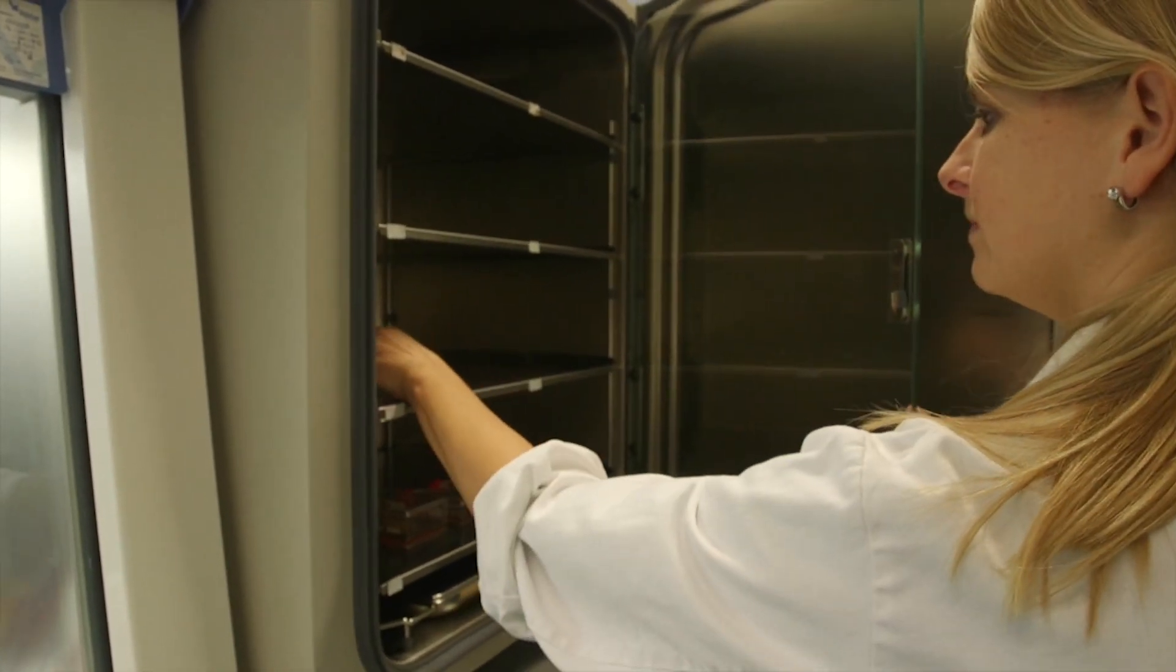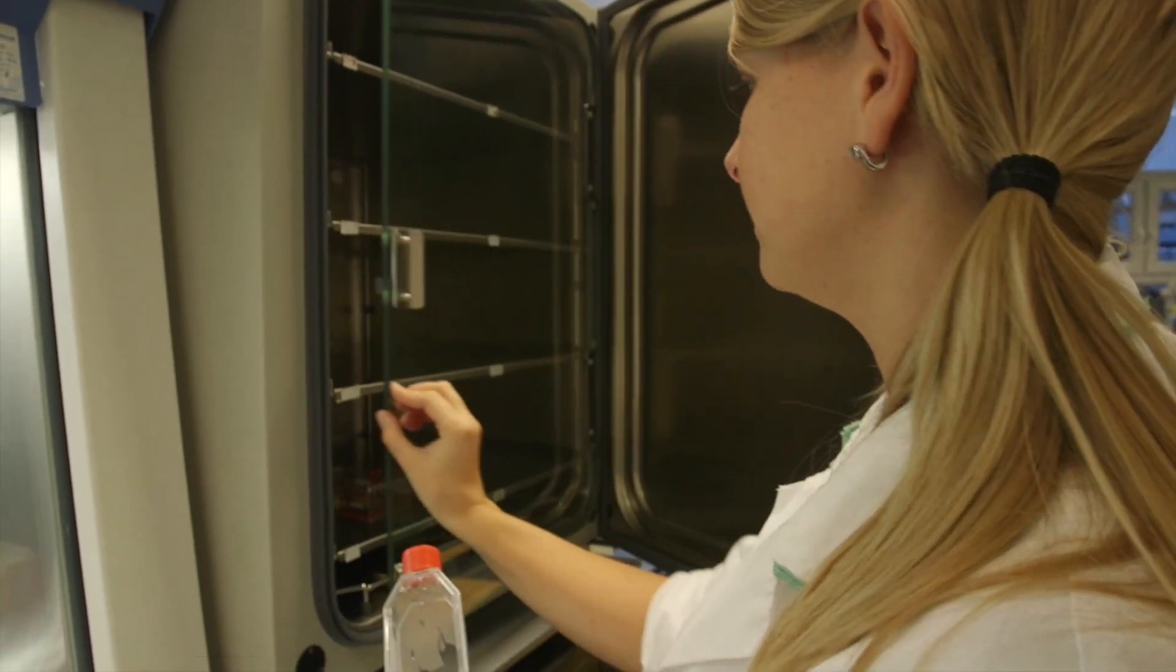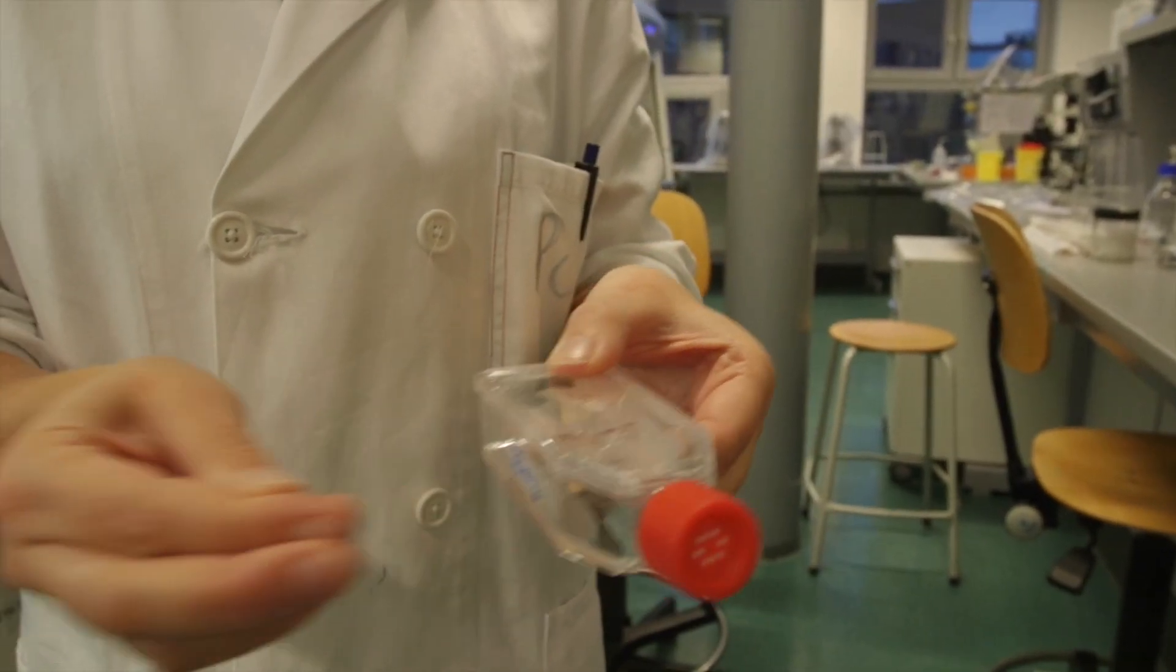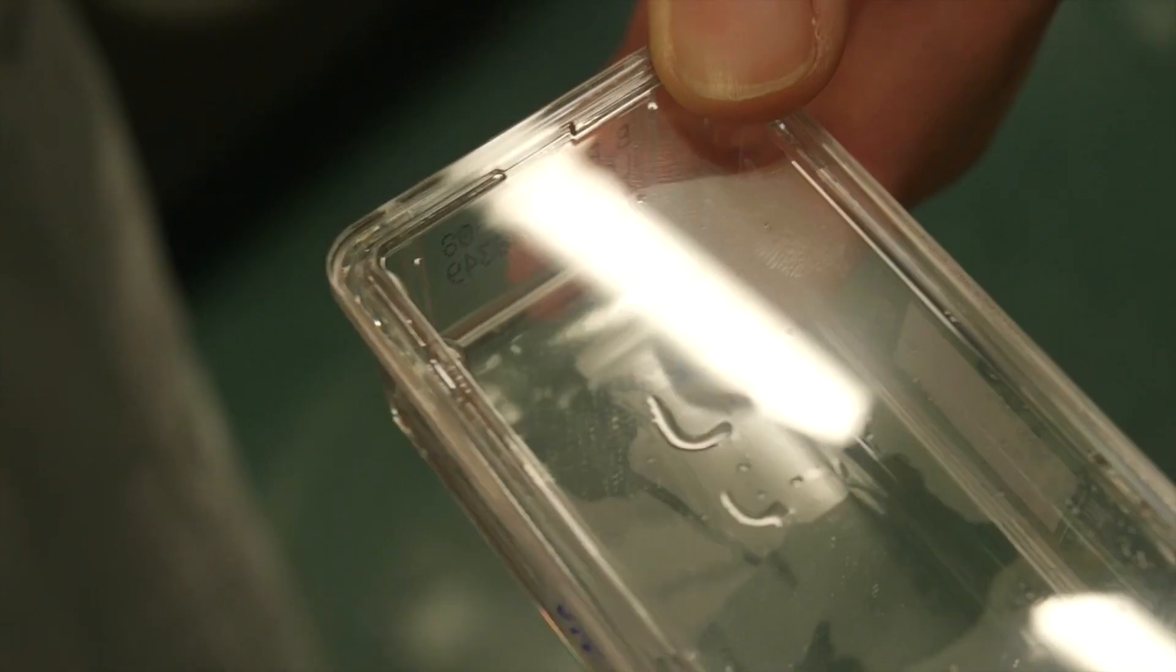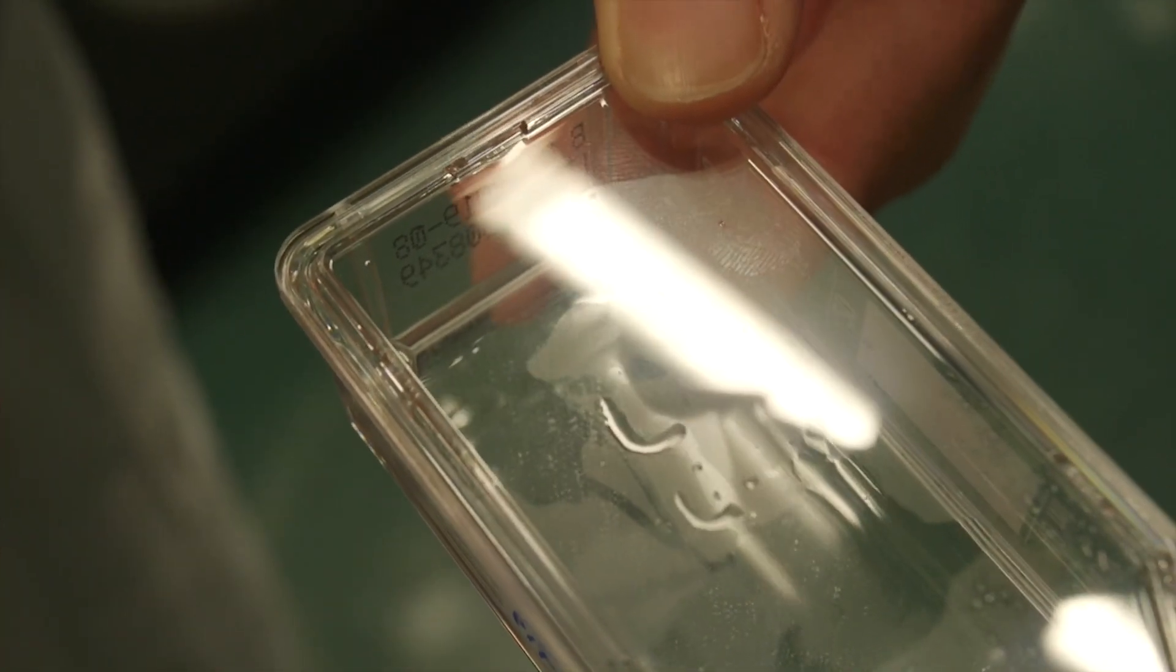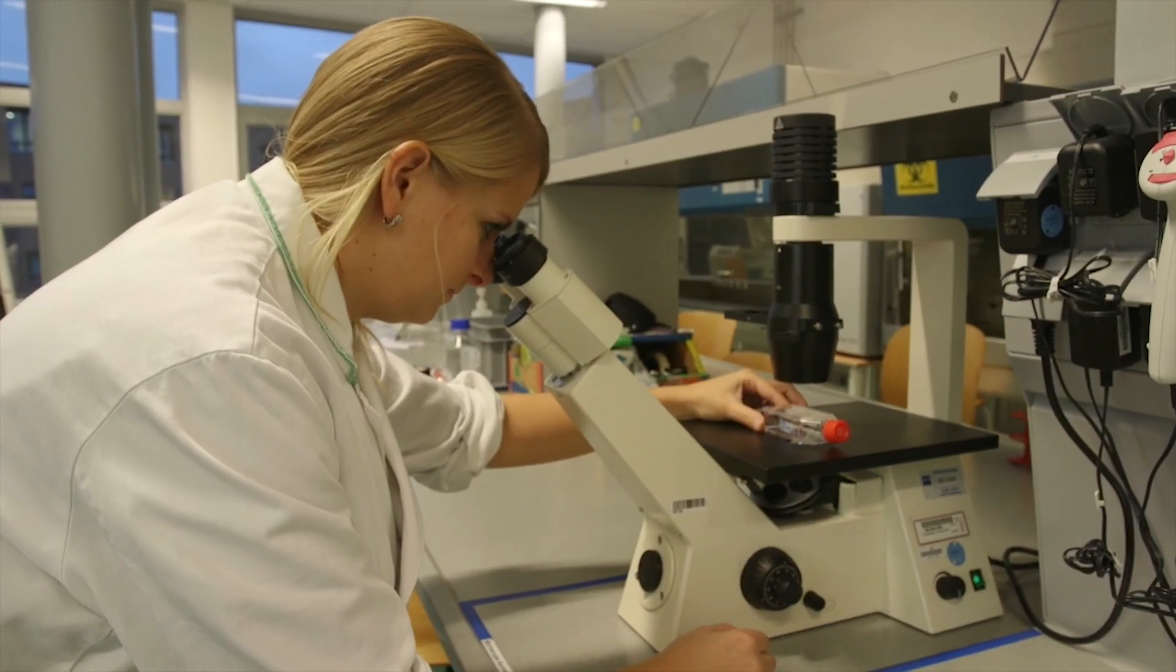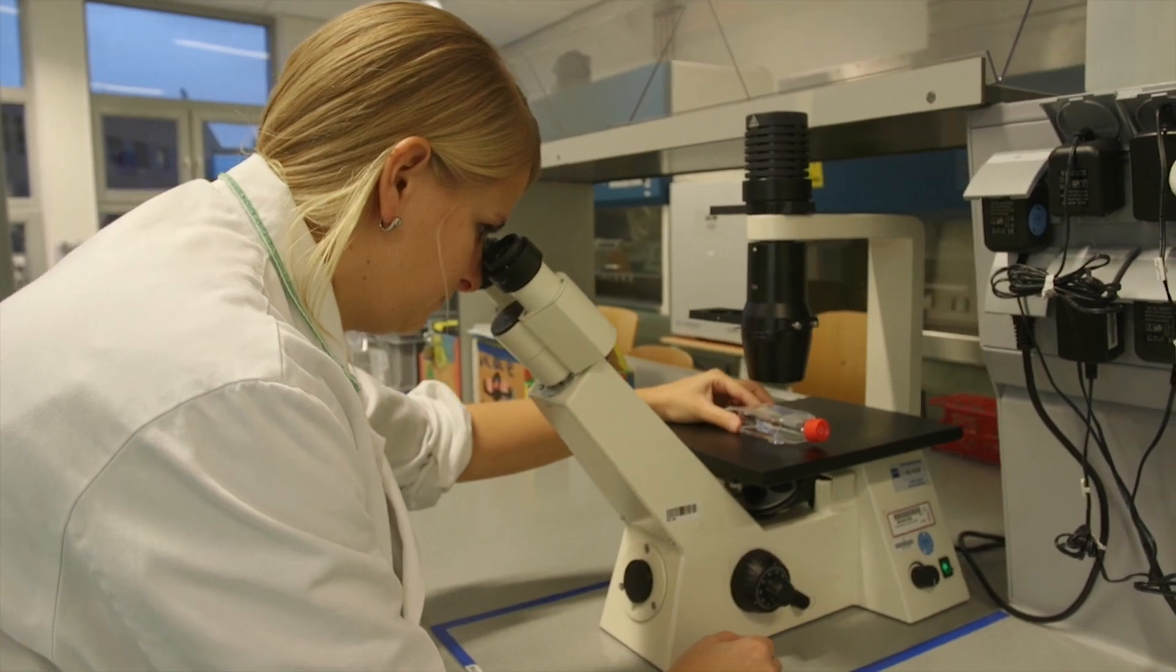After about 1 minute incubation, remove the flask from the incubator. To loosen the adhesions between the cells and the flask, tap firmly a few times against the side of the flask. With the naked eye, you should be able to see cells detaching from the bottom. Look at the cells through the inverted microscope. All cells must be detached from each other and from the bottom of the flask.